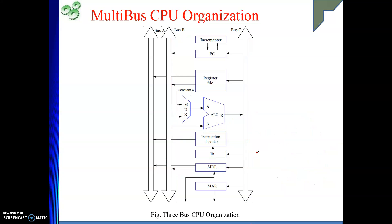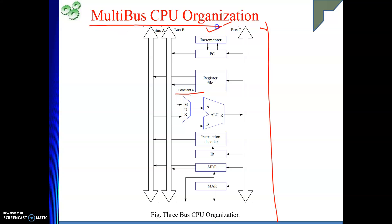Once again, the reason constant 4 is still present even though the incrementer is there: it is to support load multiple and store multiple type instructions, where in a single instruction we communicate with consecutive memory locations, and each data item is 4 bytes apart from the previous one. Constant 4 is used to update the memory address to point to the next element in the list. This is the understanding of multi-bus CPU organization. In the next video, we will see how to write the control sequence for an instruction using this organization. Thank you, and if you are benefiting from my explanations, please like my videos and subscribe to my channel.